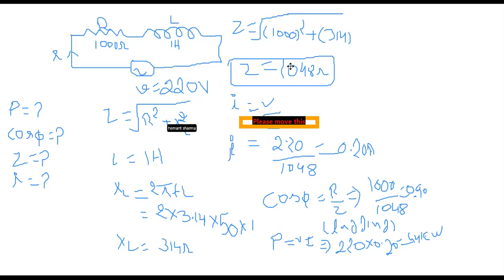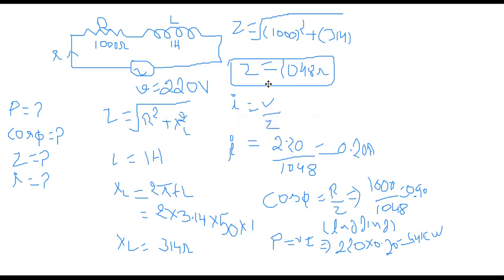Substituting into the impedance formula: Z = √(1000² + 314²), we get Z = 1048 ohms.